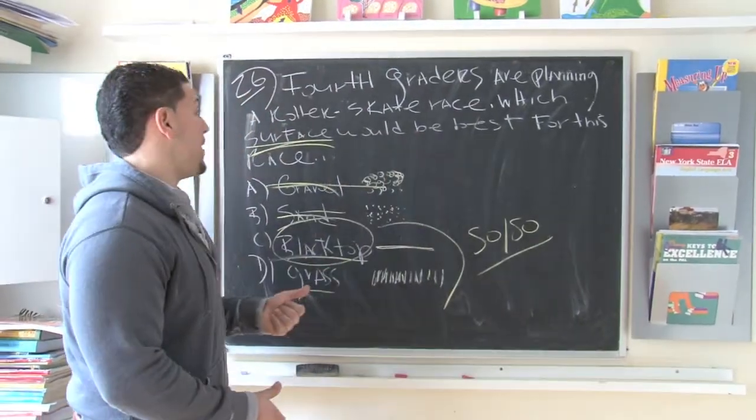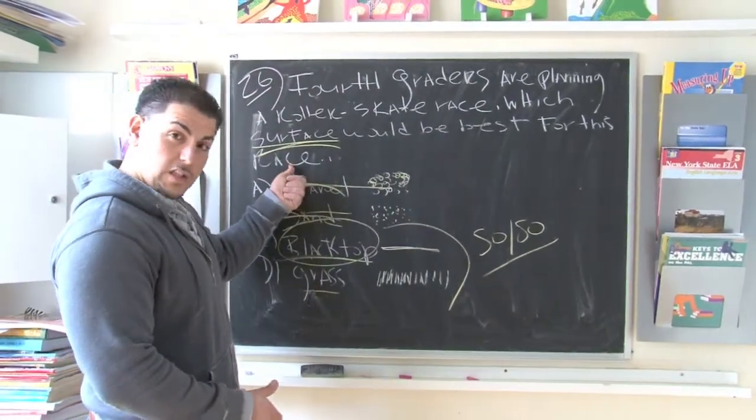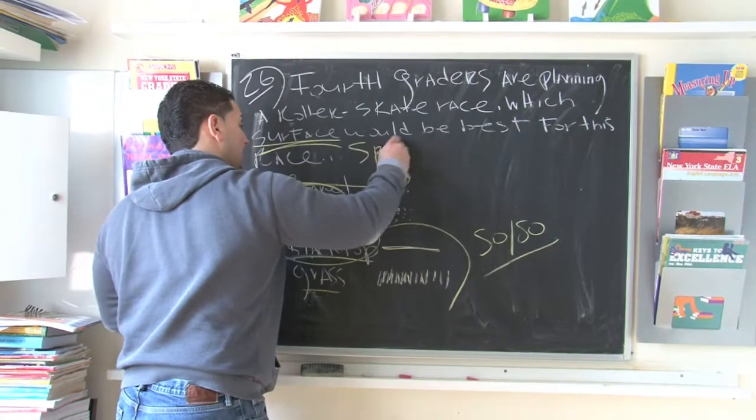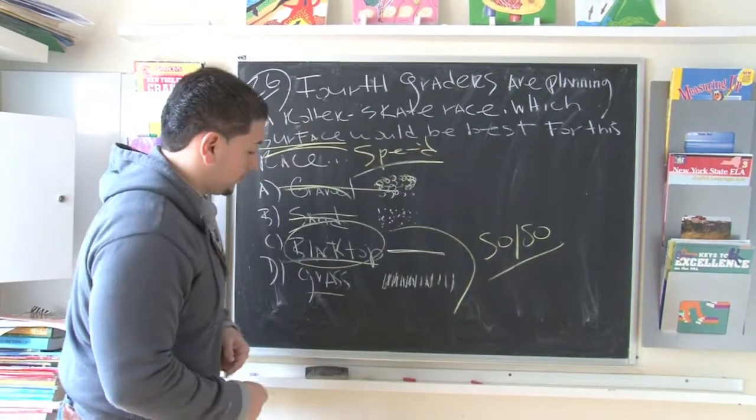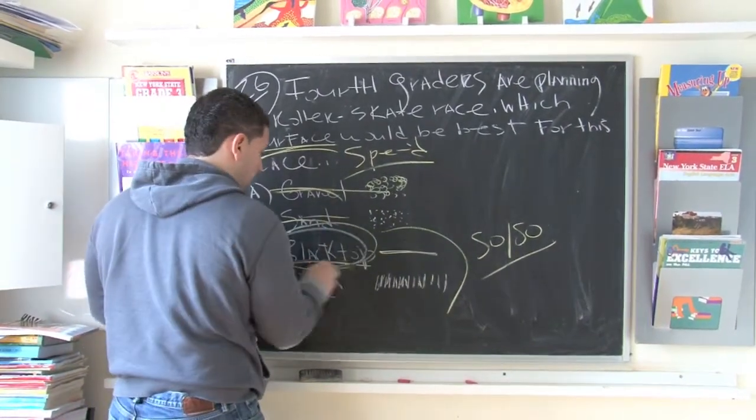But they're saying they want to know which is the best surface for a race. So they're looking to maximize speed. The best choice is black top. So make sure you put black top as your answer. Very good. Thank you.